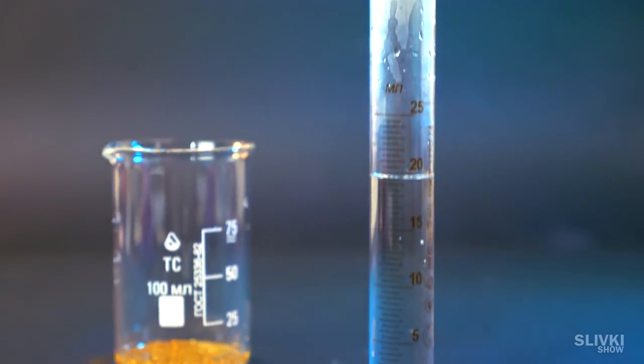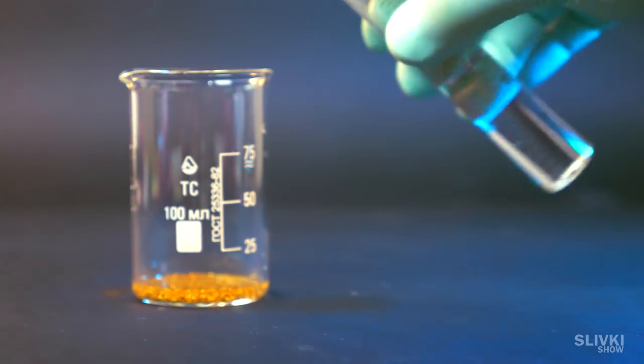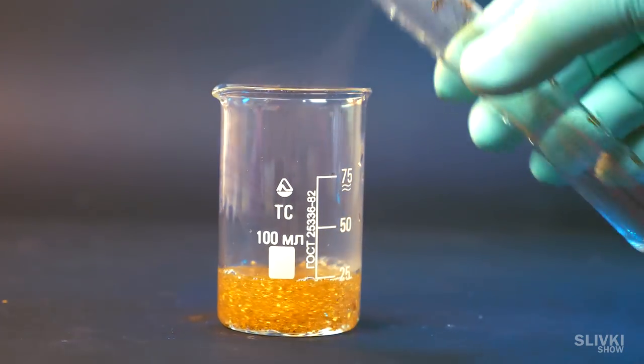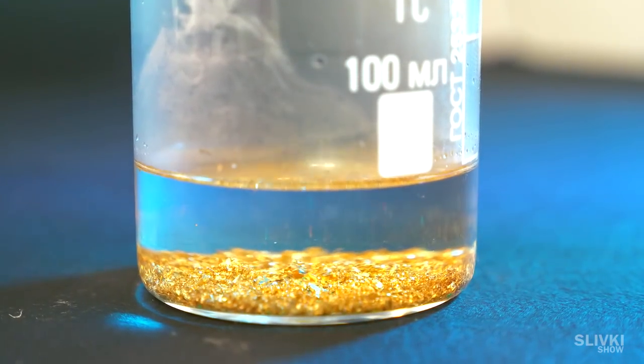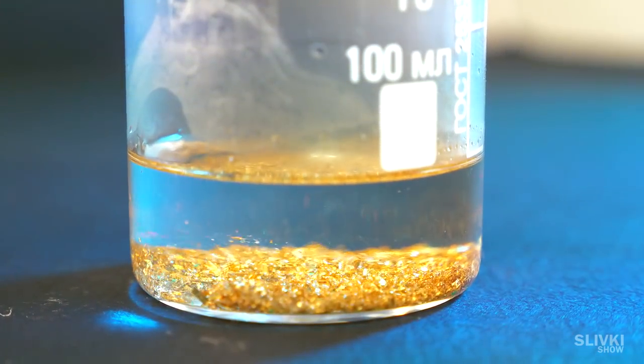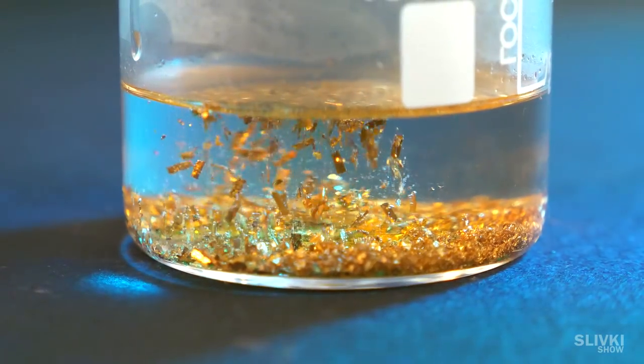Now, we got to take about 20 ml hydrochloric acid, pour gold, and add there drops a little bit of nitric acid. Because its excess will bother it in the future.